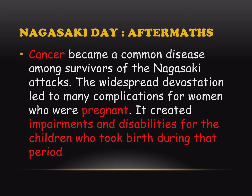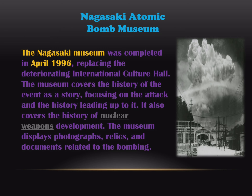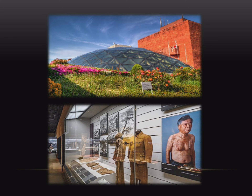The Nagasaki Museum was completed in April 1996, replacing the deteriorating International Cultural Hall. The museum covers the history of the event as a story, focusing on the attack and the history leading up to it. It also covers the history of nuclear weapons development. The museum displays photographs, relics and documents related to the bombing. These are some pictures of the museum as you can see in the presentation.